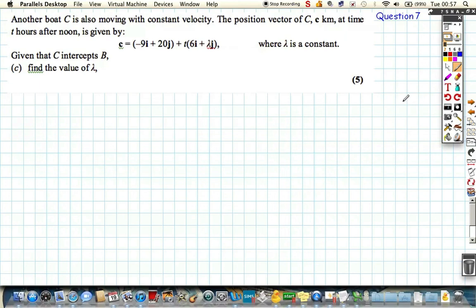Another boat is given by this, so let's convert that. Let's recap. The position of our boat B was given by the vector, or given by the expression 3 minus 4, plus time multiplied by 2, 6. If we write the same thing of our other boat, C, and we just convert what they've done into column, minus 9, 20, plus t, 6, lambda.